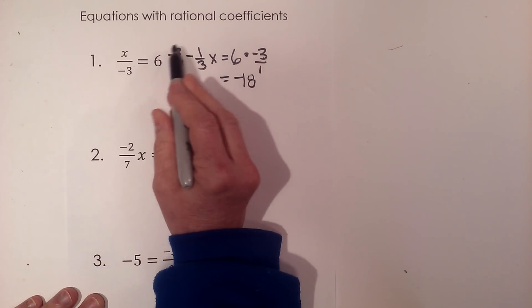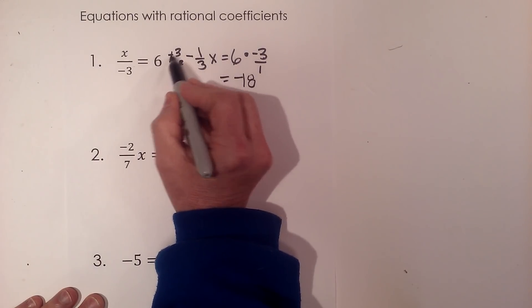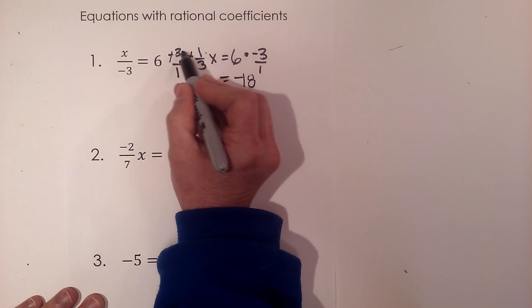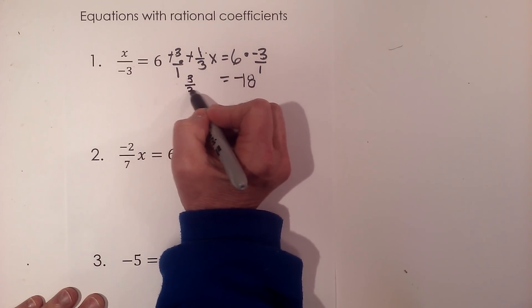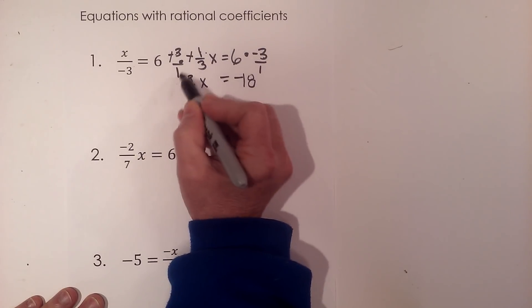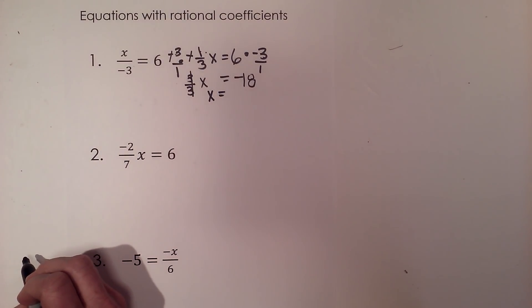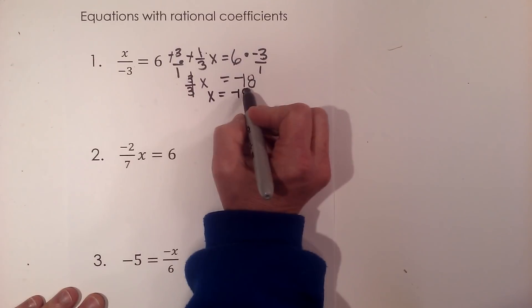When you multiply by the reciprocal, you cancel the negatives out because two negatives make a positive. Then multiply the top together to get three, the bottom together to get three. Any time you have three over three, that's just one, which is what you're trying to get. So x equals negative eighteen.